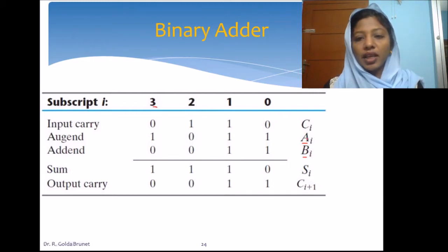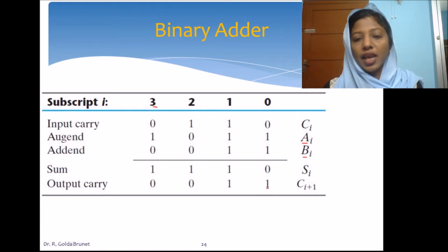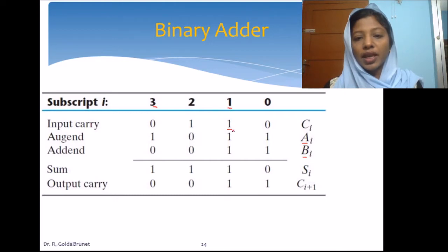When we add A and B together, we get 1 plus 1, which is 10. We get 0 as the sum and carry will be 1. This carry will be supplied to the next bit position and we have to add them together. So A is 1, B is 1 at bit position 1, and carry is 1. So we get 1 plus 1 plus 1, which is 11. So sum is 1 and carry is 1.